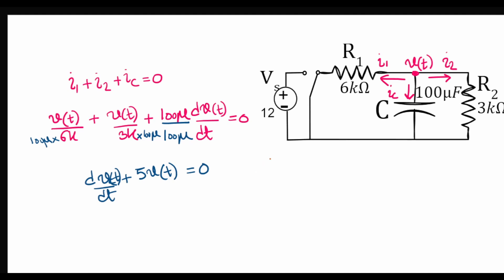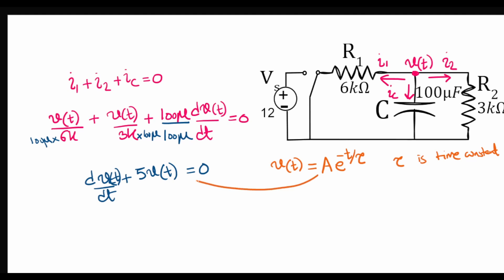The solution is of the form A·e^(−t/τ), where τ is the time constant. If you haven't seen that lecture, you can click the link to see how the differential equation is solved. By substituting this response into the differential equation, we can find the value of the time constant.